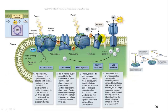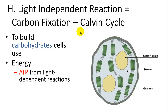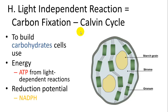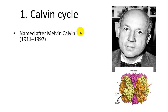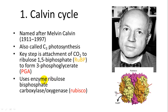The whole process is shown in the figure in your book and will be covered in class. The light-independent reactions build carbohydrates using ATP from the light-dependent reactions and hydrogens from NADPH to make sugars. This is named after Melvin Calvin and is also called C3 photosynthesis.